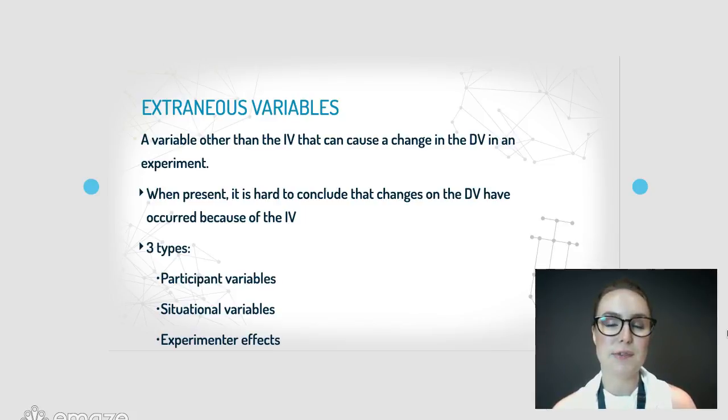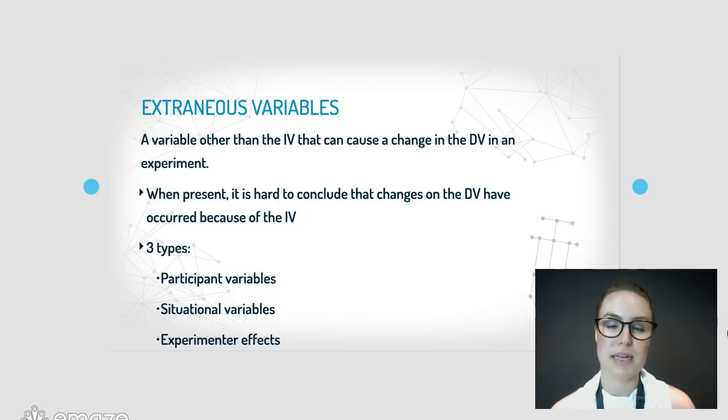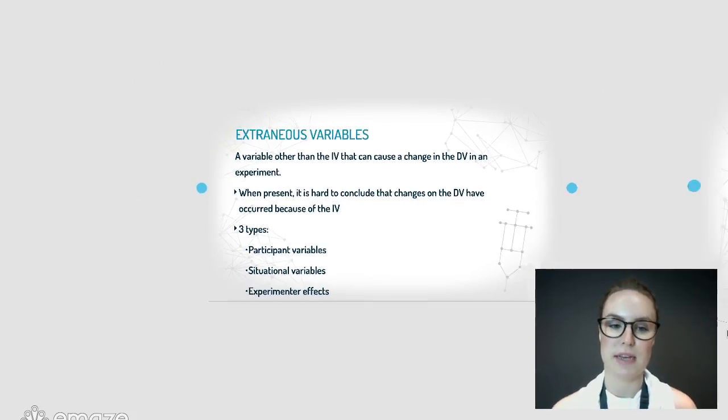There are three different types of extraneous variables: number one, participant; number two, situational; and number three, experimenter effects.